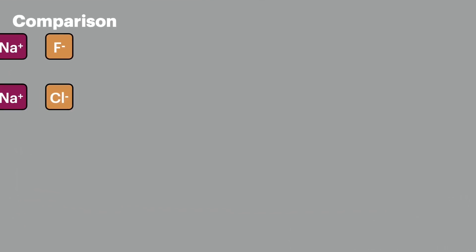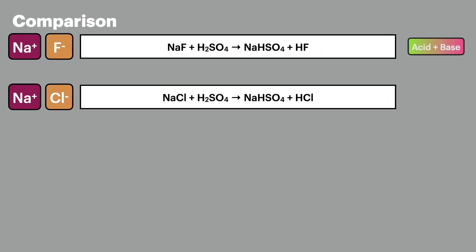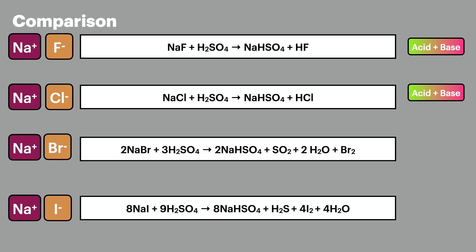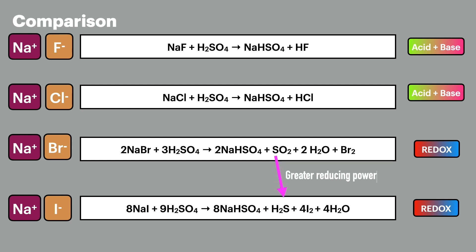Looking at all the overall equations lined up together: fluoride and chloride ions are both weak reducing agents, so they both react in acid-base reactions. Bromide and iodide are much better reducing agents, so they reduce the sulfur in sulfuric acid in a redox reaction. There is a difference between these two because iodide is a much better reducing agent — it reduces sulfur all the way down to hydrogen sulfide, where sulfur has the oxidation state of minus two.